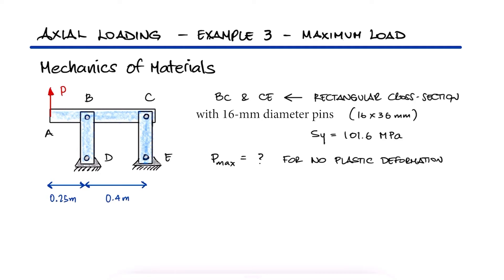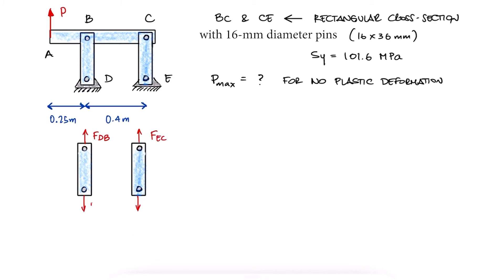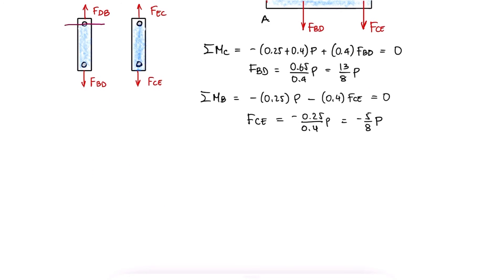With our by now usual assumption that the unknown axial loads are positive causing tension, the free body diagram for member ABC would show forces at B and C pointing down. A sum of moments about C would give us an expression for FBD in terms of P and the sum of forces about B would give us an expression for FCE in terms of P.